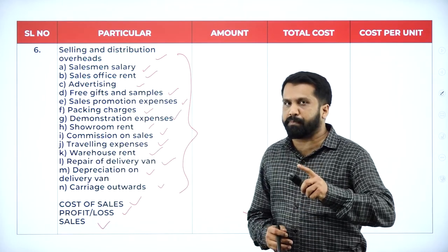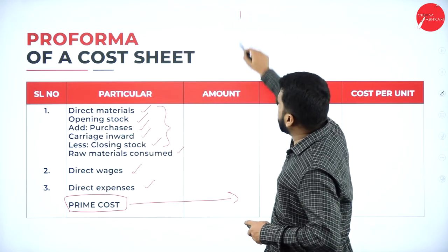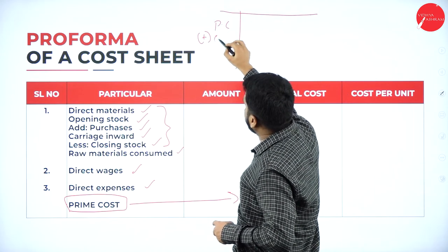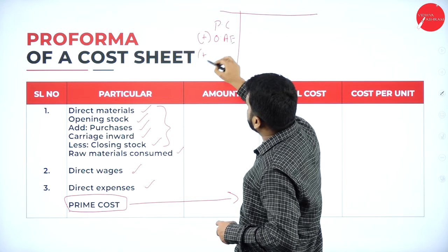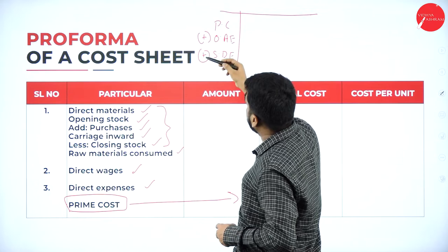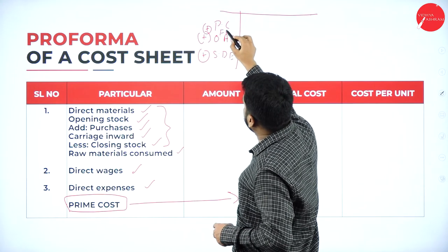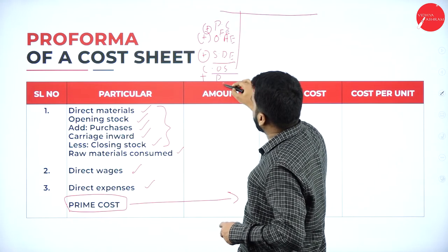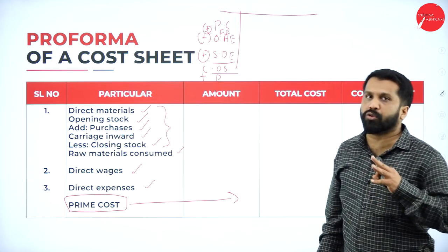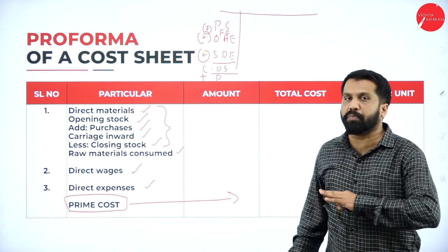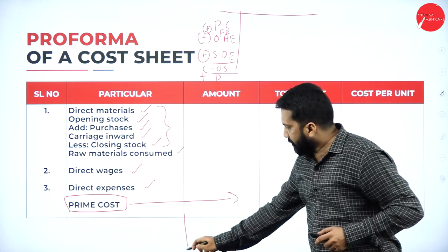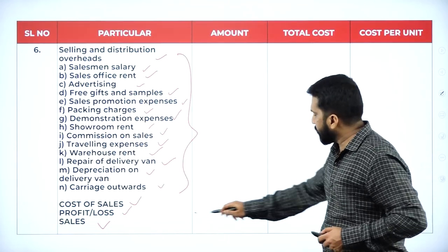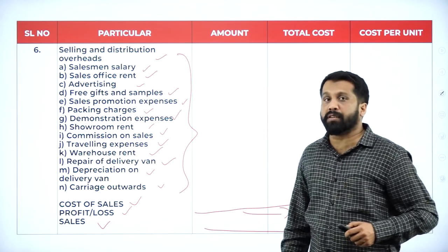Take a book and write from the beginning in the same column: prime cost, add factory expenses, add office and administration expenses, add selling and distribution expenses — you get cost of sales, add profit (minus if loss) = sales. Write the format continuously without break-up. After the third part, continue in the same column. This is the end of your cost sheet format.